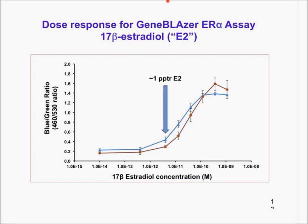Here's some data. For the estradiol assay, the group we went with — Invitrogen or Life Technologies — had a number of these assays available, and GeneBlazer is the one we decided to go with. These are readily available kits, and all we were doing was seeing whether any modifications need to be made, particularly with cell number. Showing a dose-response for estradiol: about one part per trillion — one nanogram per liter — of ethinyl estradiol is biologically active and we can pick it up fairly readily using this assay. This is very encouraging.